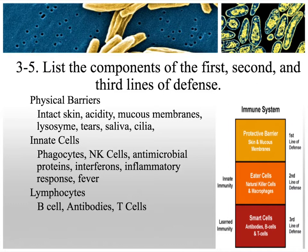The second line of defense includes phagocytes that eat foreign material, natural killer cells that inject perforin into cells to cause them to lyse, antimicrobial proteins like complement proteins that work in several ways, interferons that interfere with viral reproduction and protect surrounding cells, the inflammatory response, and fever brought on by pyrogens. If the innate cells don't fix things, the third line — your immune system — involves lymphocytes: B cells and T cells.